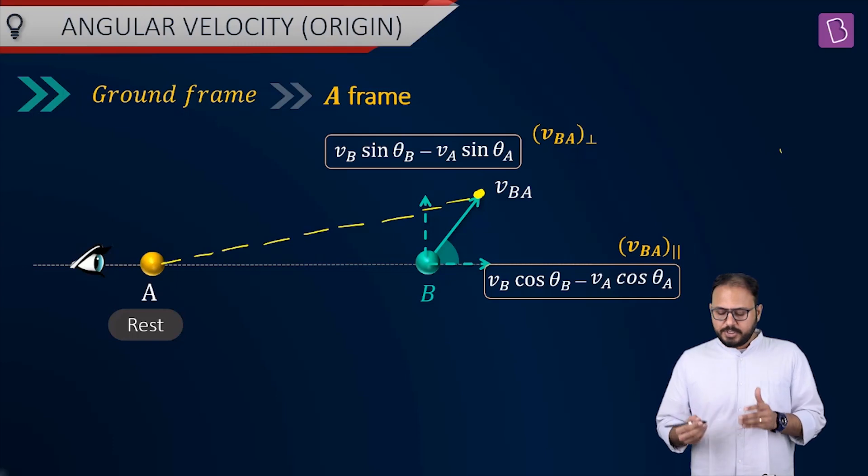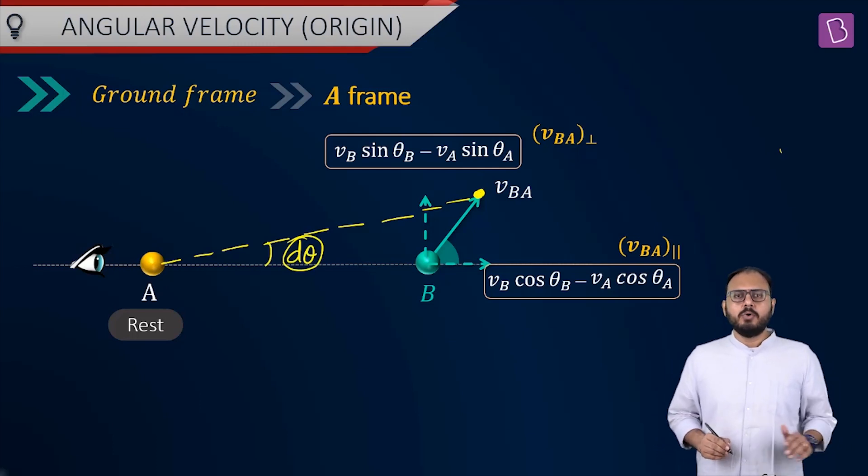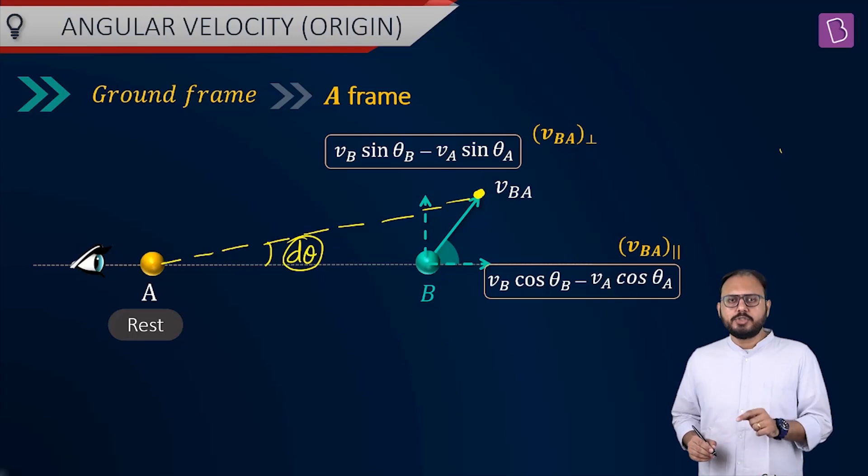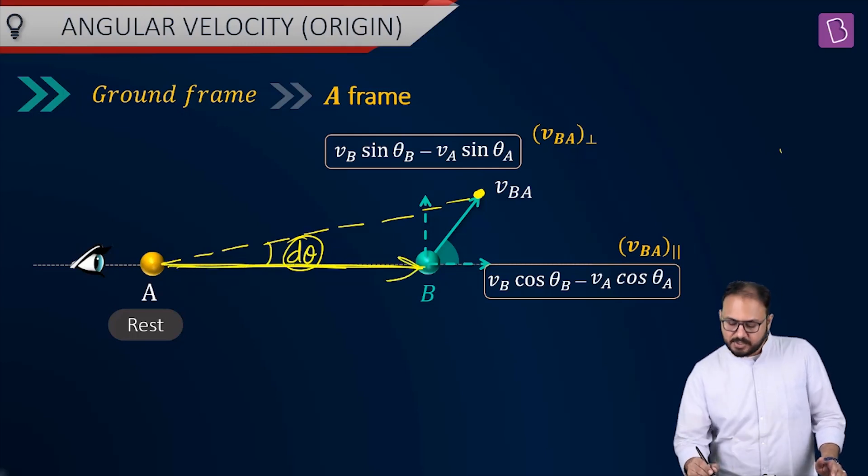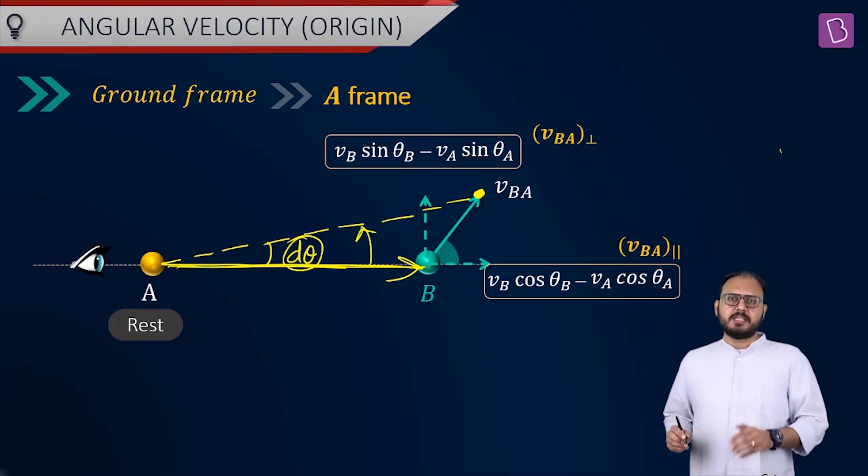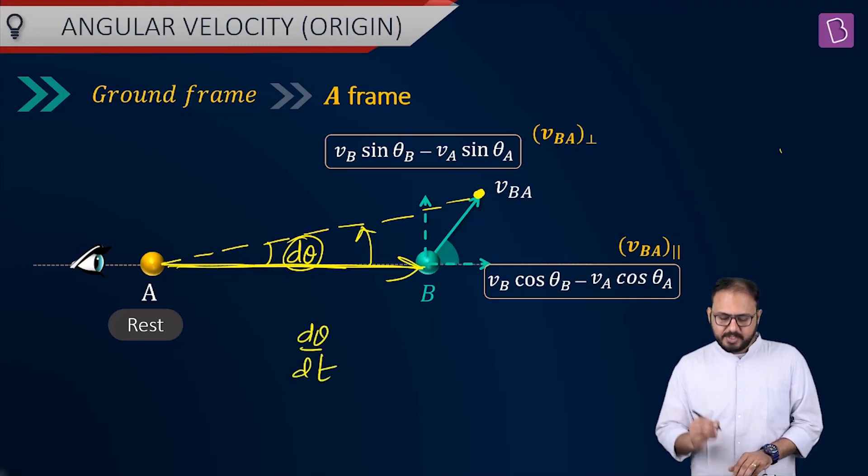Who is responsible to increase the separation? In other words, if this position, if AB value has increased to AB dash, who is responsible to increase the value? vba parallel. But, who is responsible for this angle? Who changed the angle? Who changed the angle of the line joining them with respect to the reference axis? If I choose this as my reference axis, who is responsible for this d theta in dt time? Who is responsible for this d theta by dt, my lord?